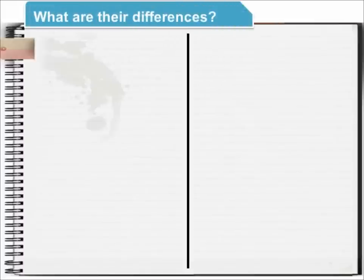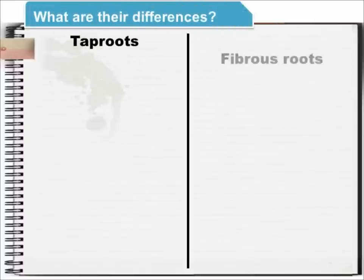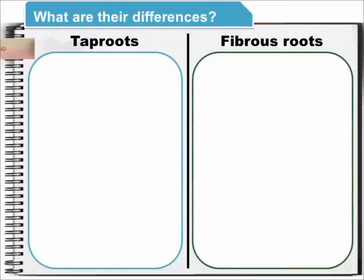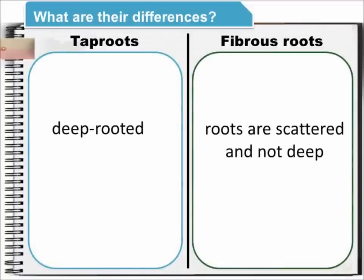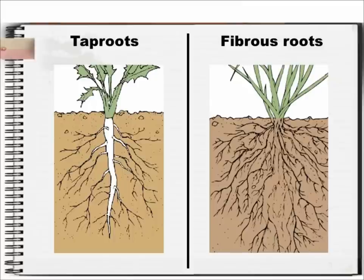What are their differences? Taproots are deep rooted while fibrous roots have scattered roots that are not deep. The image on the left is a taproot while the other one is a fibrous root.